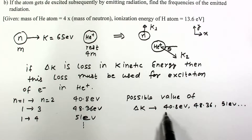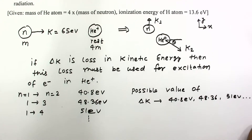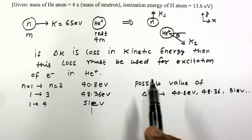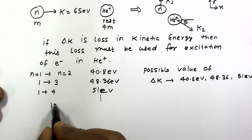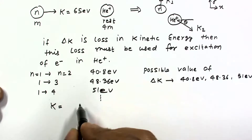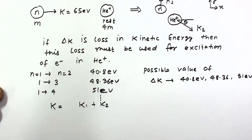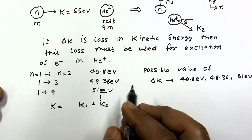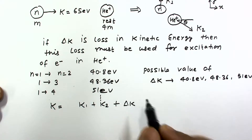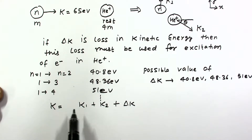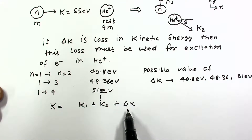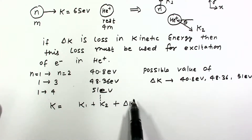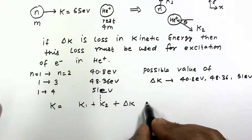We will confirm which of these losses actually occur in this situation. Applying energy conservation: the total energy is conserved overall. Initially we have total kinetic energy k. After collision we have kinetic energy k1 for the neutron and k2 for helium plus, and some part delta k is lost to excitation of the electron. So: k = k1 + k2 + delta k. This is equation number 1.